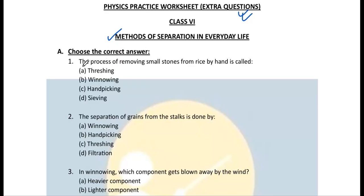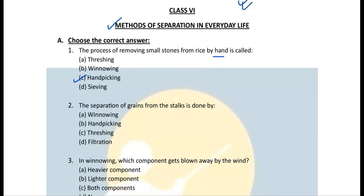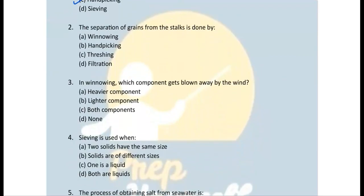Question 1: The process of removing small stones from rice by hand is called — correct answer is (c) hand picking. Hand picking is a process in which you remove small stones or other impurities from rice or pulses using your hand.